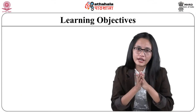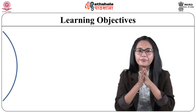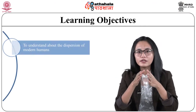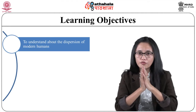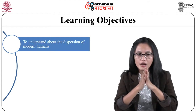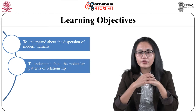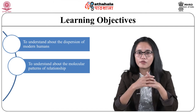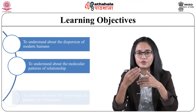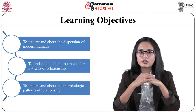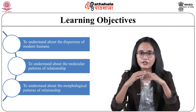The learning objectives of the module are: number one, to understand about the dispersion of modern humans; number two, to understand about the molecular patterns of relationship; number three, to understand about the morphological patterns of relationship.